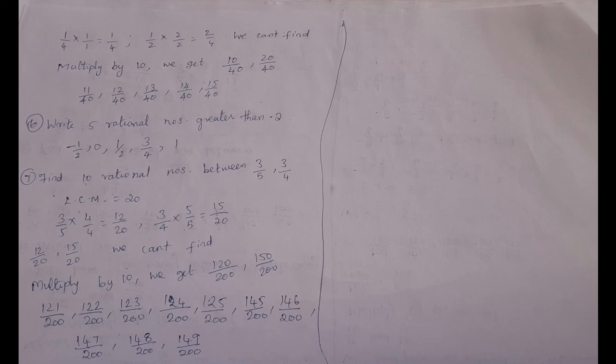Sixth sum: write 5 rational numbers greater than minus 2. Numbers greater than minus 2 are: minus 1 by 2, 0, 1 by 2, 3 by 4, 1. These are 5 rational numbers greater than minus 2. On the number line, we can find them on the right side of minus 2.